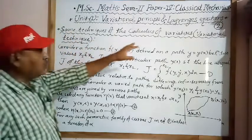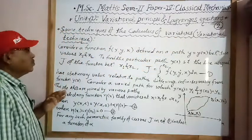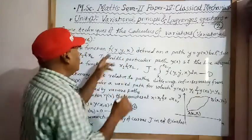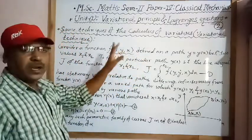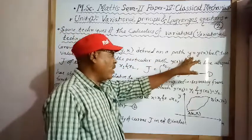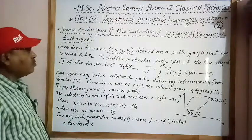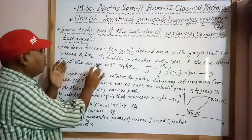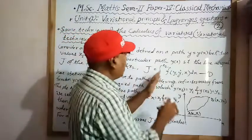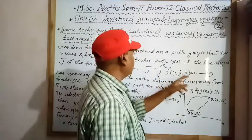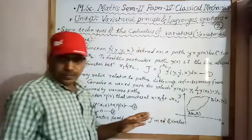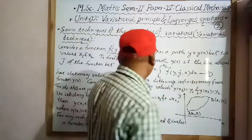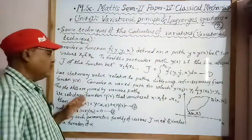We consider techniques of the calculus of variations. Let f be a function of y, y-dot, and x, where y-dot means the derivative dy/dx, depending on a path y = y(x). Between two values x1 and x2, we want to find a particular path y(x) such that the line integral J of f from x1 to x2 has a stationary value relative to paths differing infinitesimally from y(x).